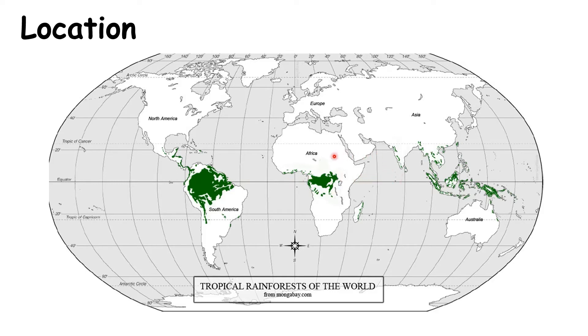Generally speaking, the rainforests are sandwiched between the Tropic of Cancer, which is this dotted line, and the Tropic of Capricorn. So we call them tropical.